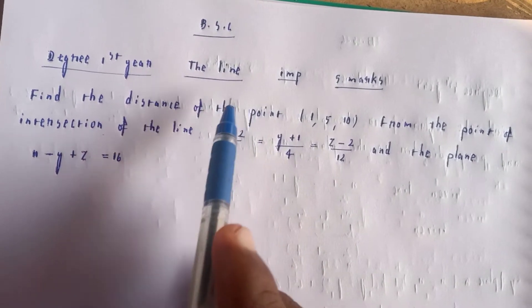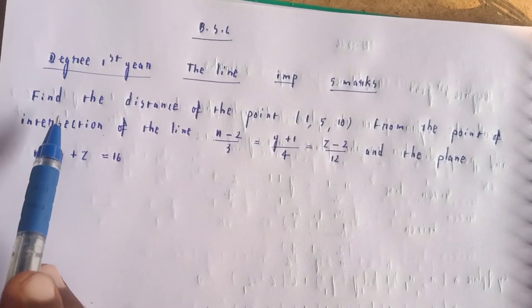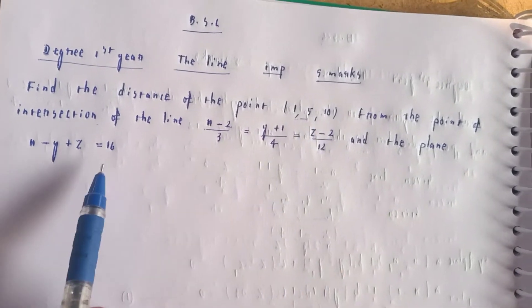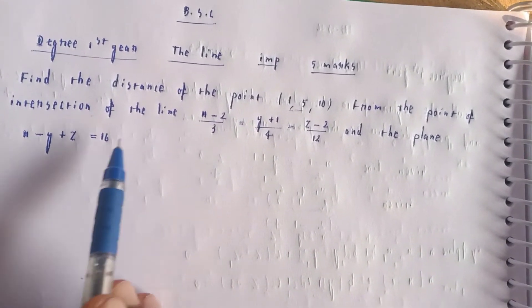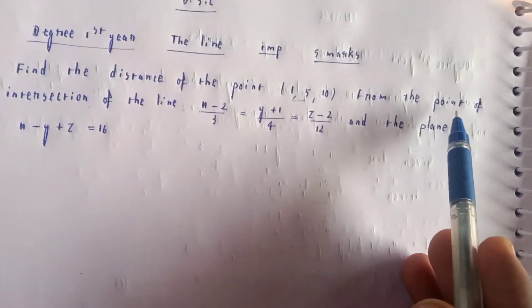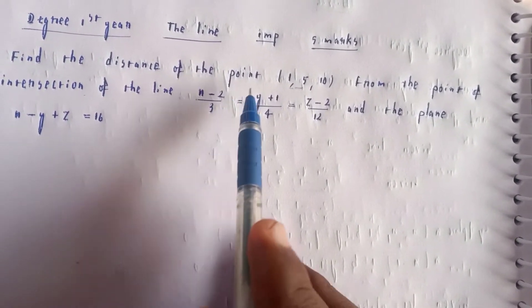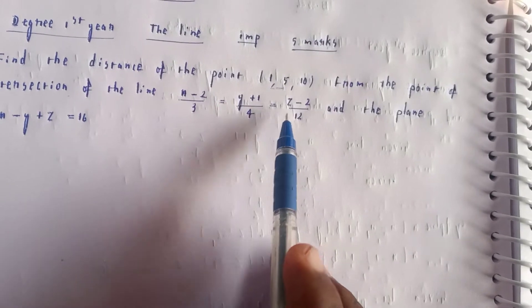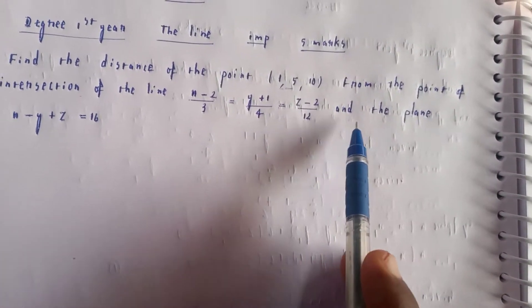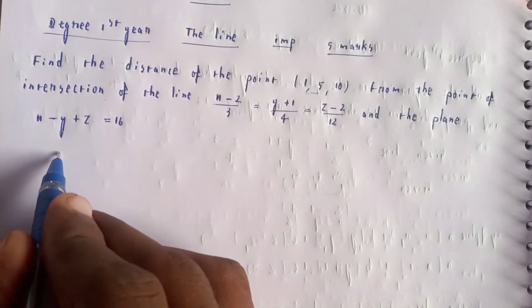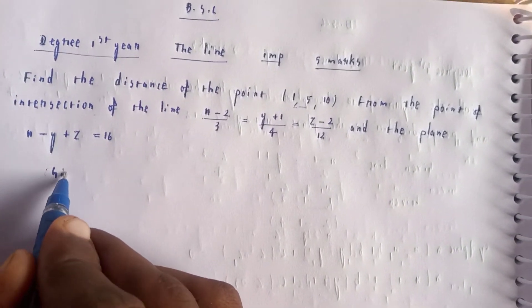Welcome to my channel. First we need to find the distance of the point from the point of intersection of the line and the plane. The line is given as (x-2)/3 = (y+1)/4 = (z-2)/12 and the plane equation is x - y + z = 16.